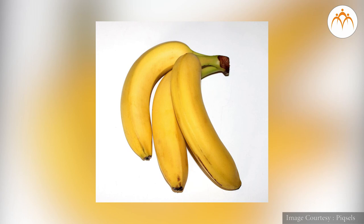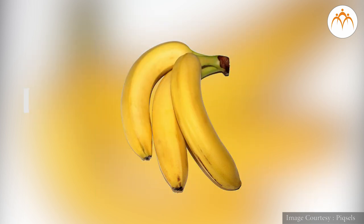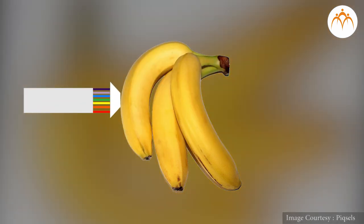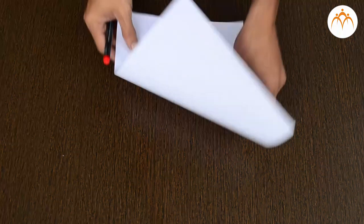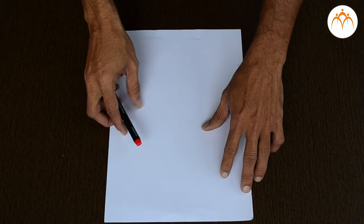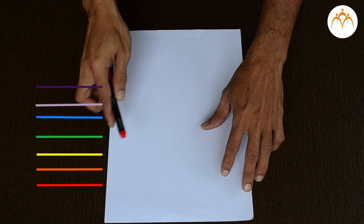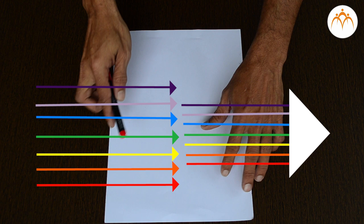Take the example of this banana. Why is this banana yellow in colour? It is because the banana absorbs all non-yellow light, or wavelengths of those colours, and reflects only yellow light. Can you tell why this paper is white in colour? It does not absorb any particular wavelength of light, but reflects all the wavelengths.